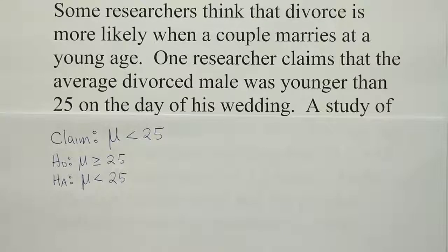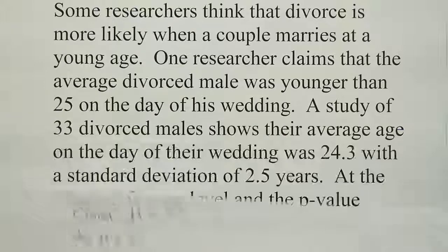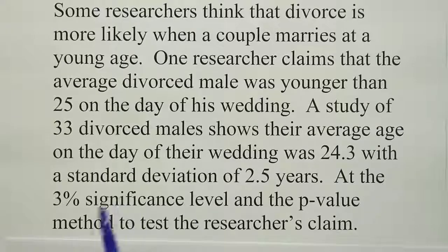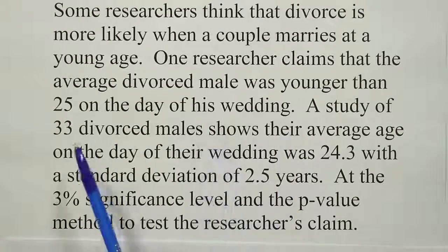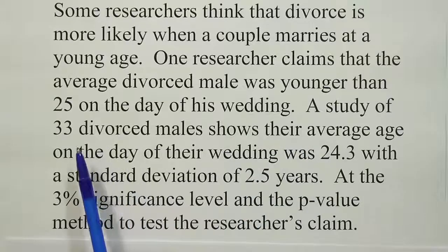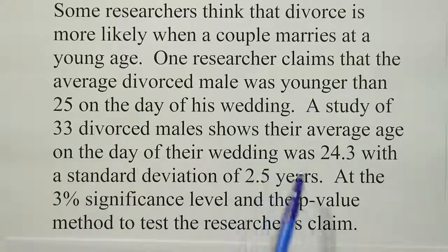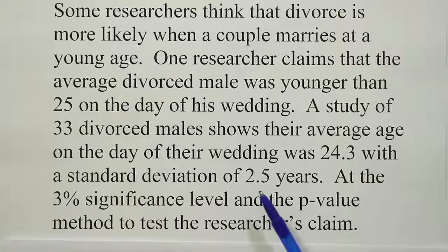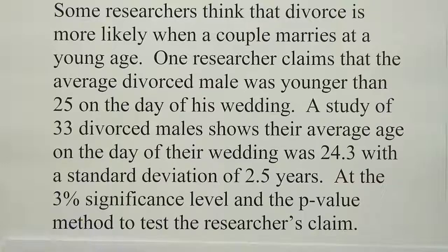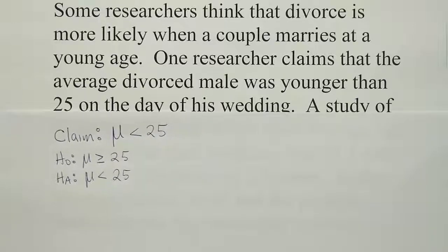At that point, the next thing we need is the data. So let's write down the data from the problem. If we move this down, we'll see that the data involved a study of 33 divorced males. So the n is 33. It says their average age on the day of the wedding was 24.3 and standard deviation was 2.5. And they tell us the significance level is 3%. Let's go ahead and fill all that in then for this problem.